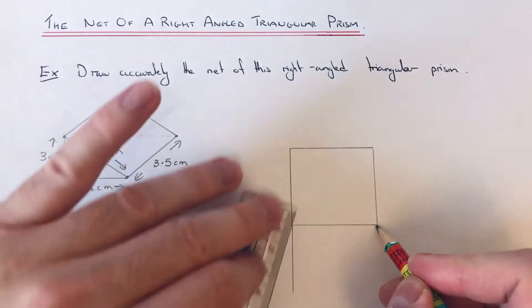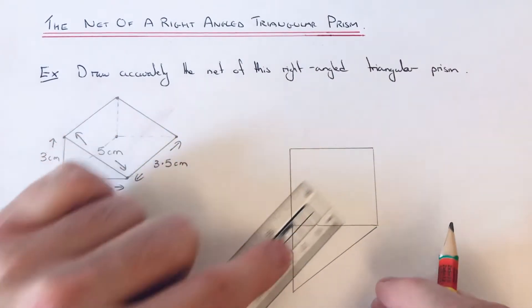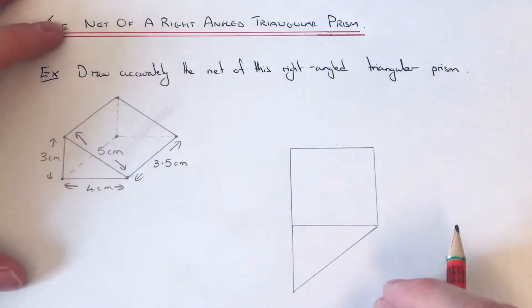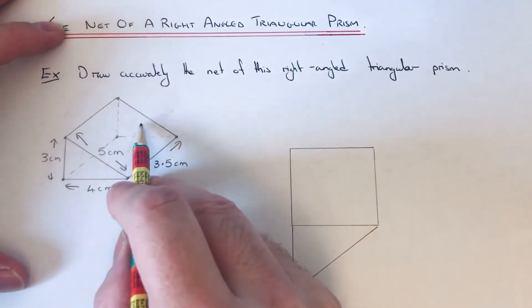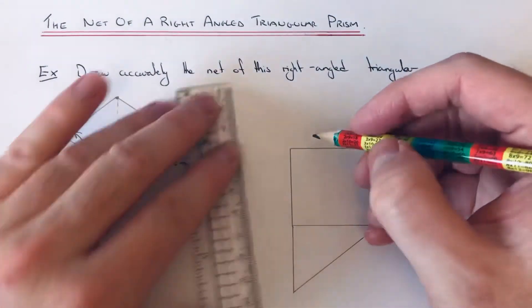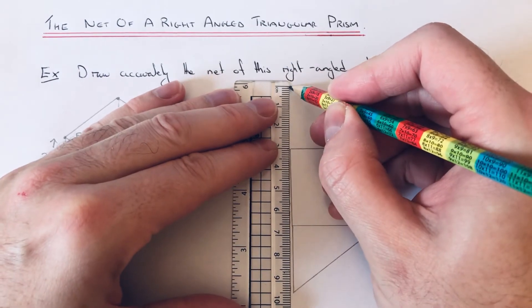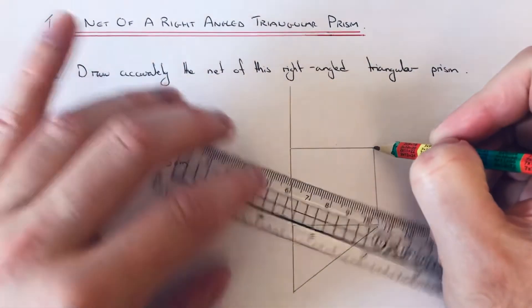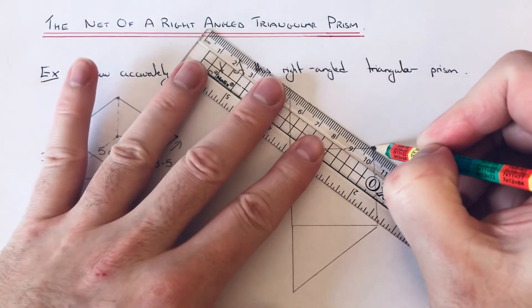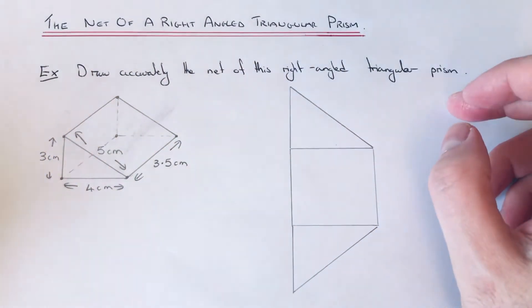draw it up to this edge here. Then we just need to do the same for the back triangular face. Okay, so again the height is going to be three, so we just need to go out three centimeters and then join it to this corner here. So we've done three of our faces.